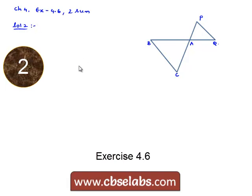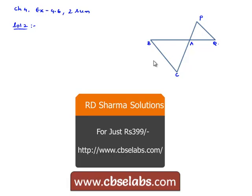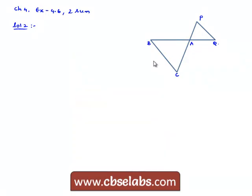Here the question given is that in the figure, triangle ACB is similar to triangle APQ, and the values BC is given as 10 cm, PQ is given as 5 cm, BA is given as 6.5 cm, and AP is equal to 2.8 cm. Find CA and AQ, also find the area of triangle ACB to area of triangle APQ.